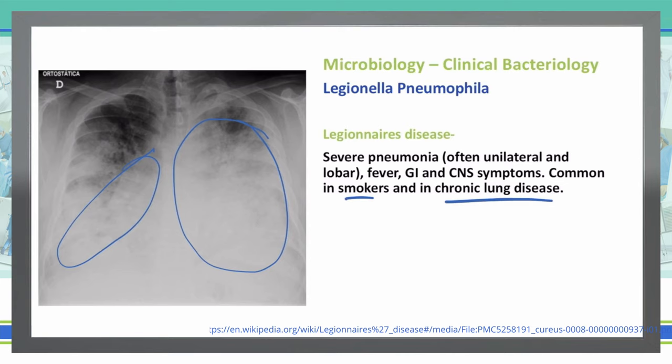The second type of disease Legionella can cause is Pontiac fever. Pontiac fever is really mild — it just feels like you have the flu. It's self-limiting and most people will get over it pretty quickly, but you can also use the treatments we talked about earlier — macrolides or quinolones — to help clear it.